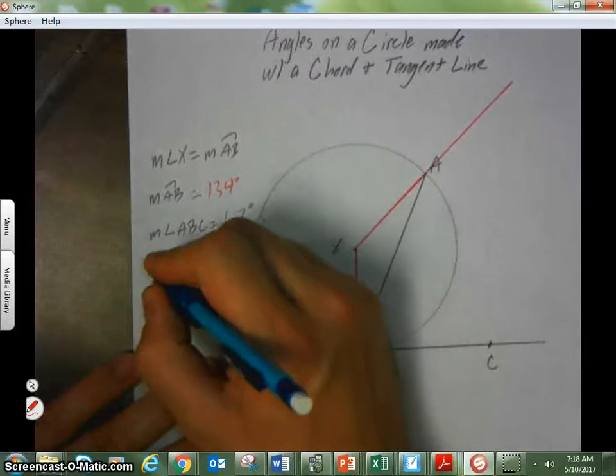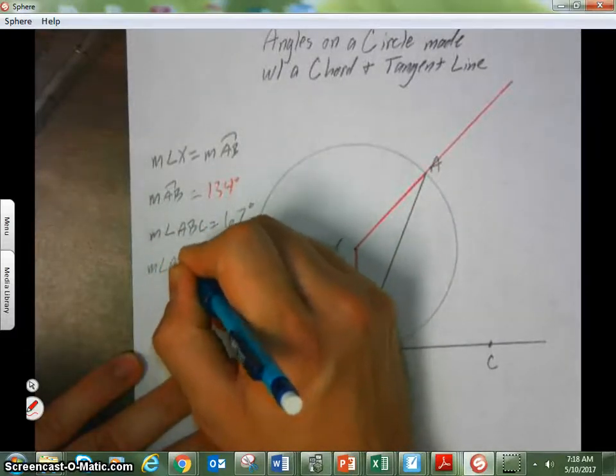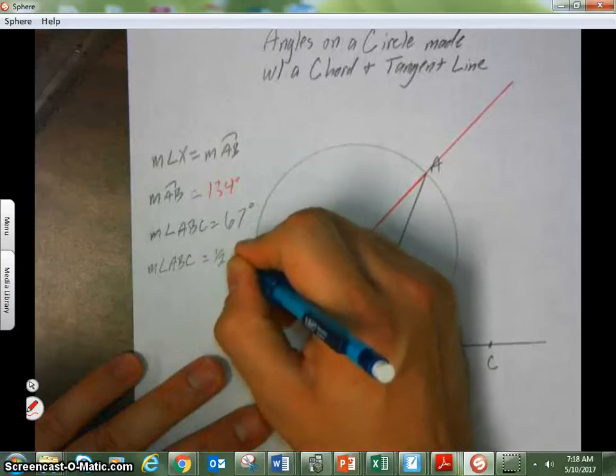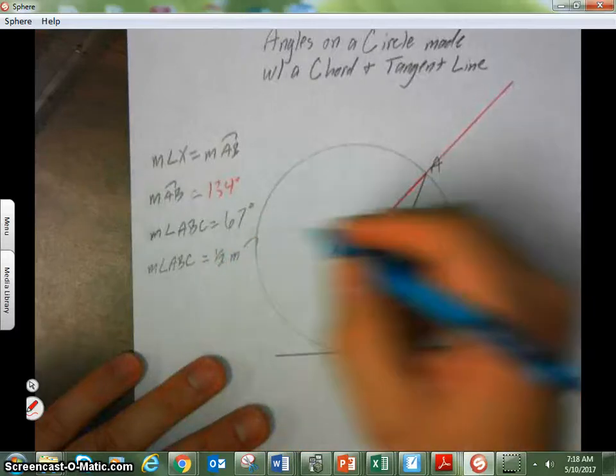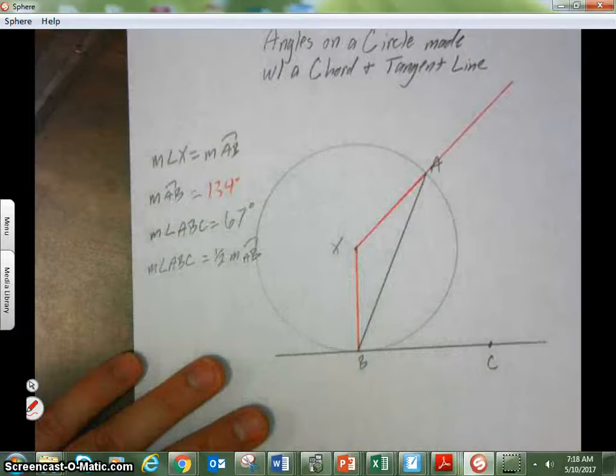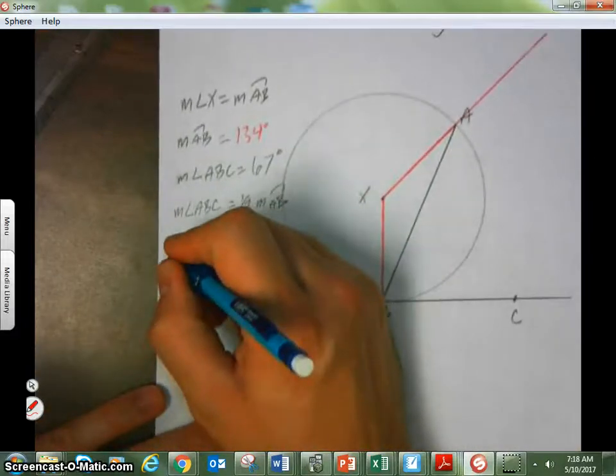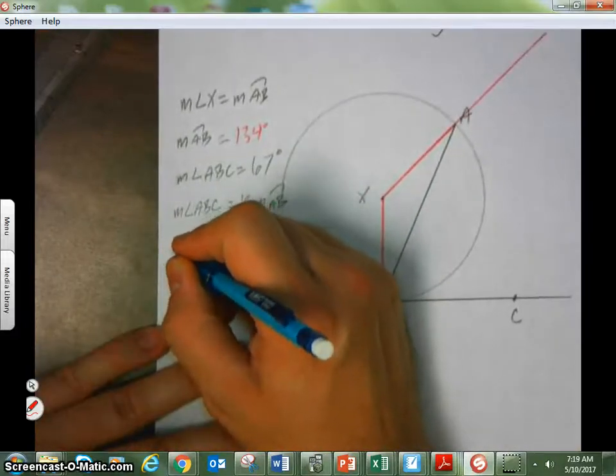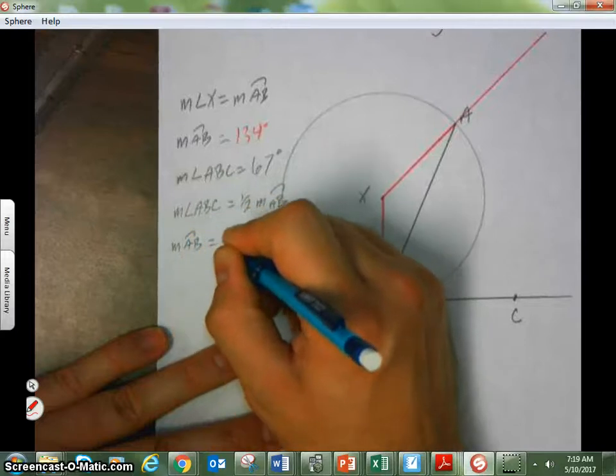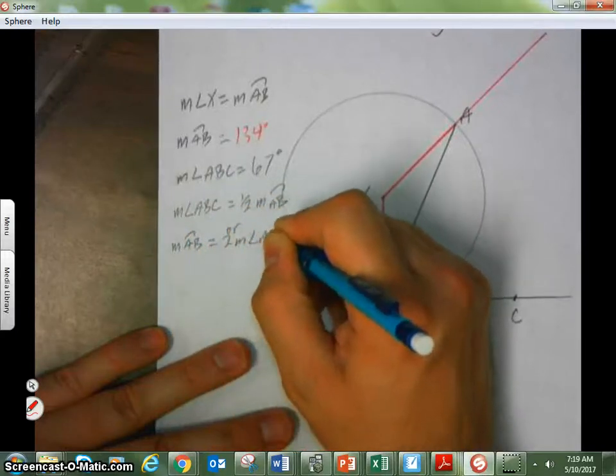So, here, we can say the measurement of angle ABC is half of the measurement of arc AB. Or, we can say the measurement of arc AB will be two times the measurement of angle ABC.